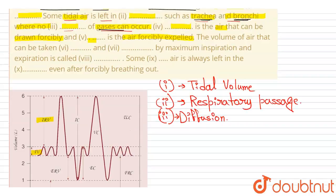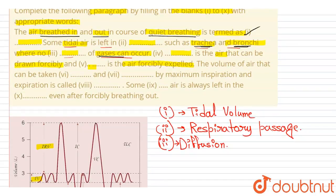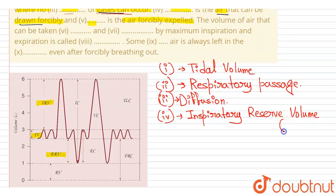The question asks: the dash is the air that can be drawn forcibly. This is the Inspiratory Reserve Volume — the volume of air that can be inspired by a maximum inspiratory effort. So number four will be Inspiratory Reserve Volume, or IRV, and number five will be Expiratory Reserve Volume, or ERV.